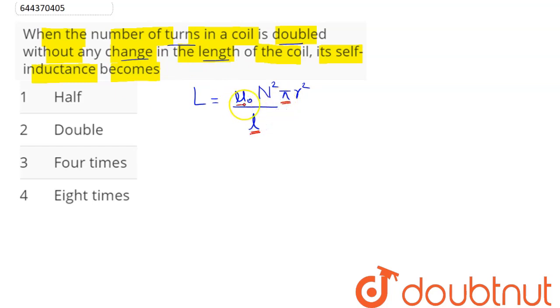Hence we can say here self-inductance is directly proportional to the square of number of turns. Now as N is doubled, we can say here the ratio of self-inductances L₁ by L₂ will be equal to N₁ divided by N₂, whole square.